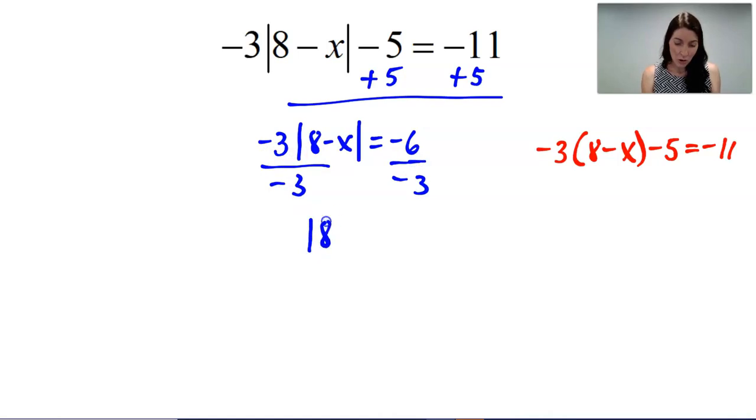And our whole goal is to isolate that absolute value so that we can now write our two equations. Because now this expression is 2 units away from 0. Therefore, this expression can be equal to 2 or 8 minus x could be equal to negative 2.